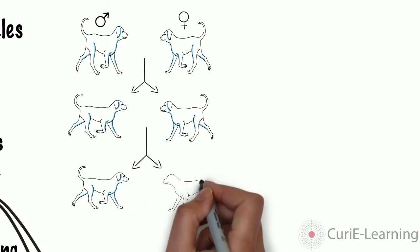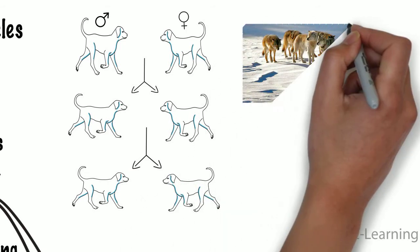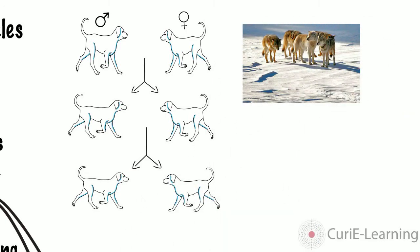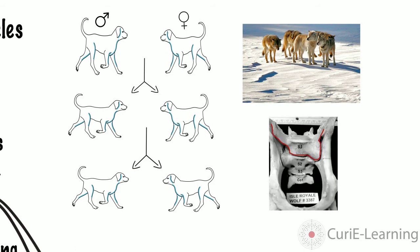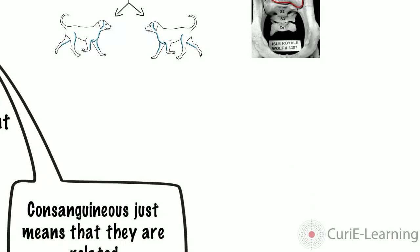A good example of how inbreeding can have a negative impact comes from the wolves of Isle Royale, where the population decreased to about eight wolves and vertebral deformities started to appear. Eventually the population dwindled to only two individuals and genetics confirmed that they were father and daughter as well as being half-siblings.